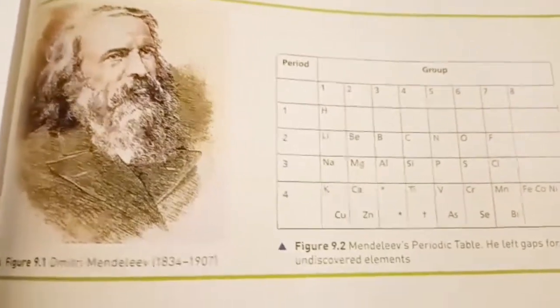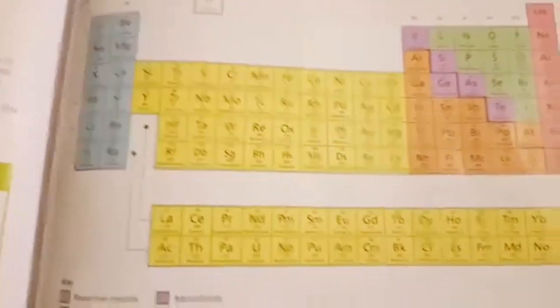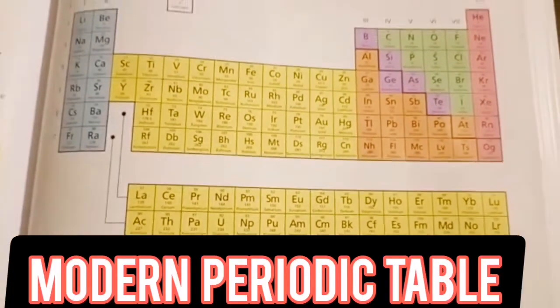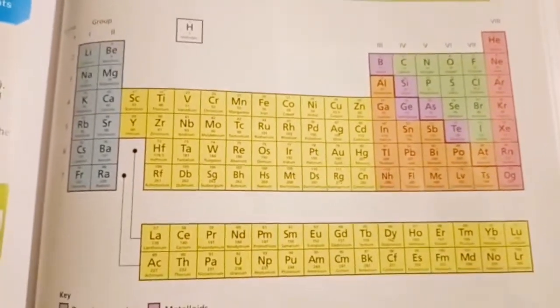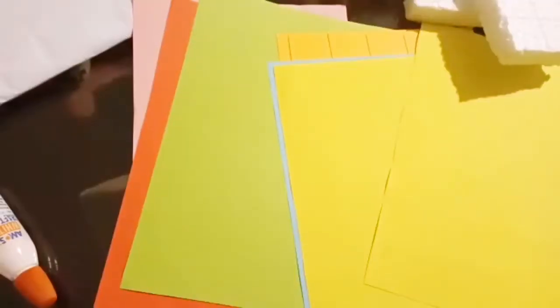The periodic table is a vital tool used by chemists to predict the way in which elements react during chemical reactions. The periodic table was devised in 1865 by the Russian Dimitri Mendeleev, who was a professor of chemistry at St. Petersburg. Today I will make a model of the periodic table.